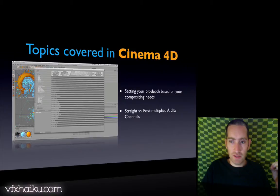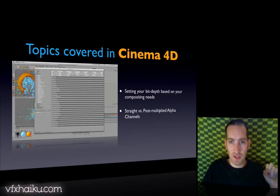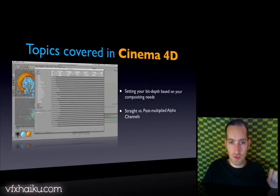We also look at different bit depths and what bit depths you should be rendering at depending on your compositing needs. We also look at alpha channels — straight and pre-multiplied alpha channels — and take a look at the difference between both of those and what works in what situations and what doesn't.